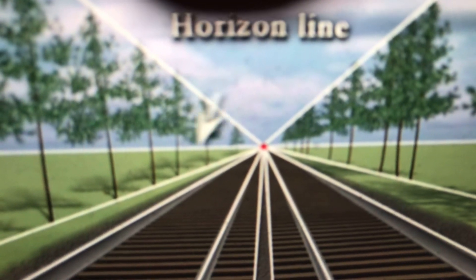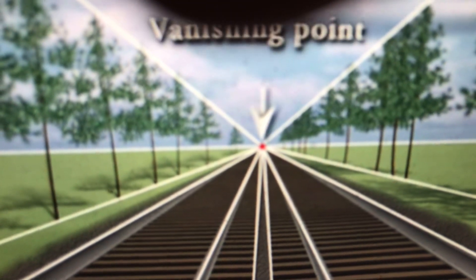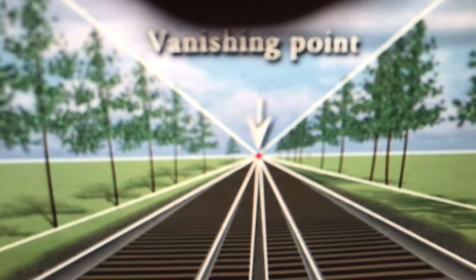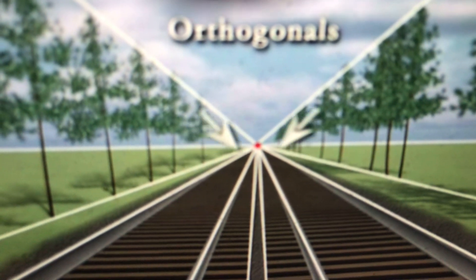In this diagram, you have a horizon line that you can see, which is the only horizontal line in this drawing. You have a vanishing point here right in the middle, and you have the lines of orthogonals going back to it. Now, this is based actually on how the human eye...